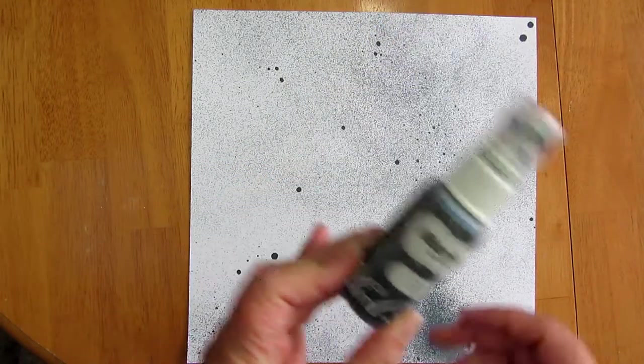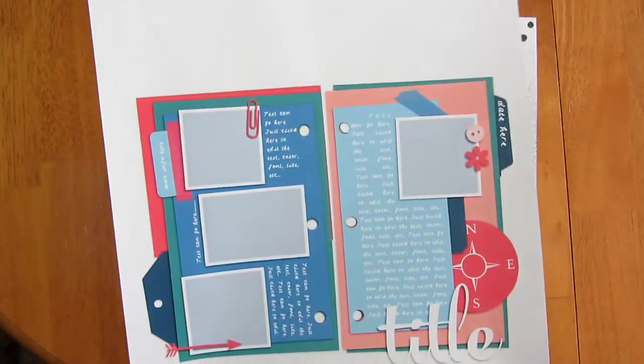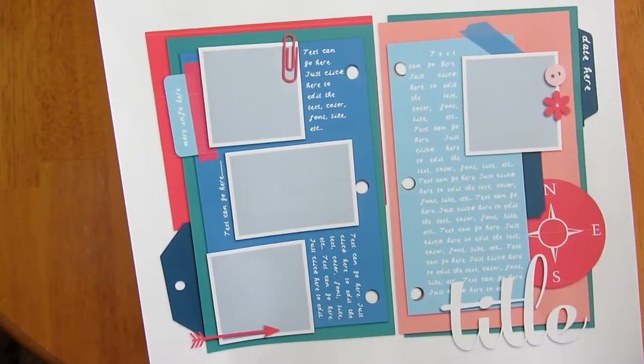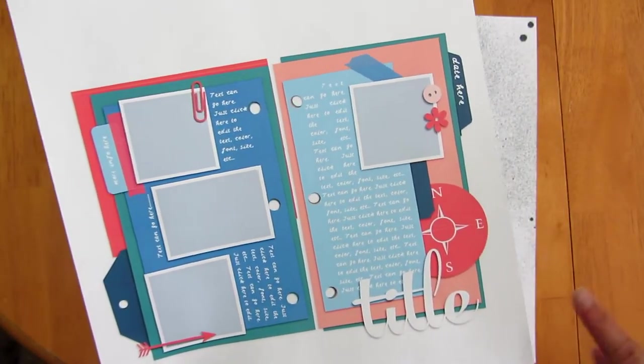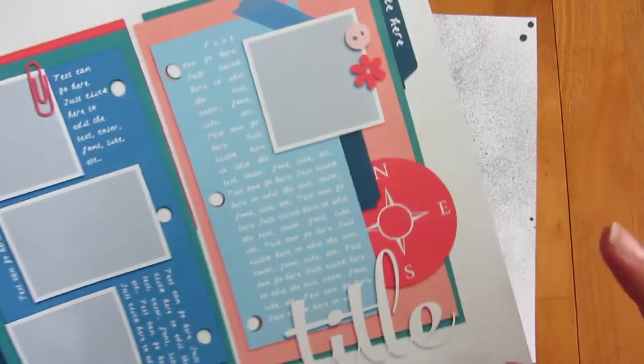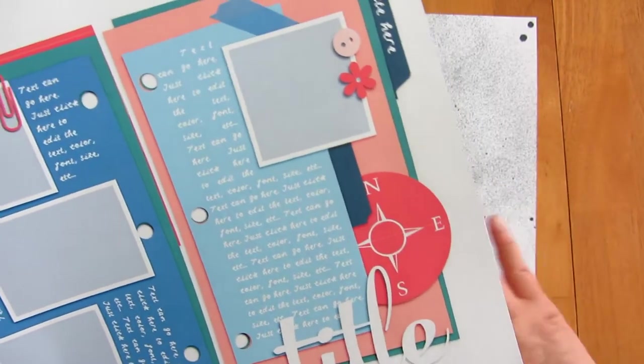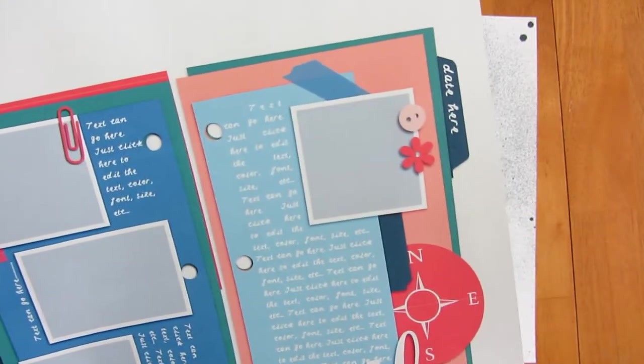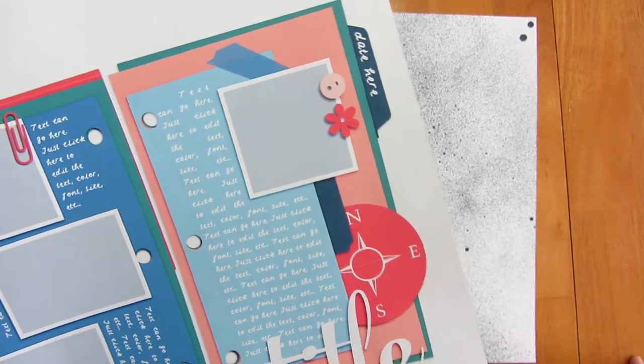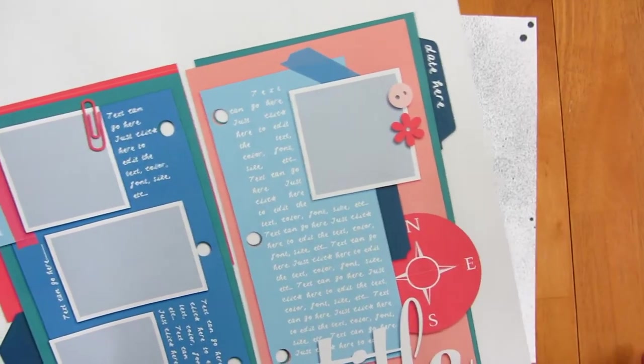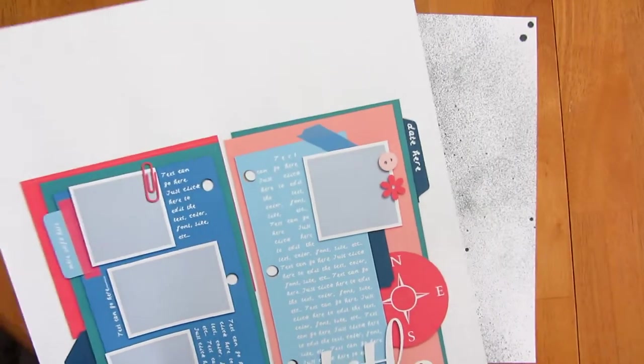So what I started with is a 12x12 sheet. This is Stampin' Up Whisper White cardstock and then I just sprayed Mr. Huey's Passport and splattered it a bit. This is the bottle. I've started with a template, this is from the collection by Scrapping with Liz. It's called My Travel Journal Templates. There are four different 12x12 templates in it and I've printed out so I can show you. I am just using the right side of the template and I will center it and you'll see what I mean in a minute.